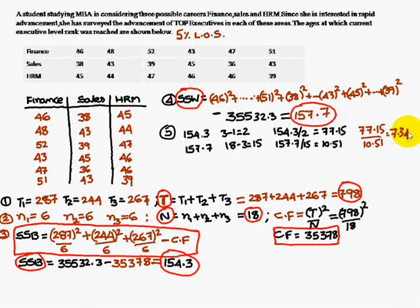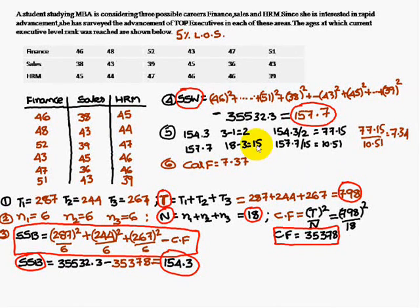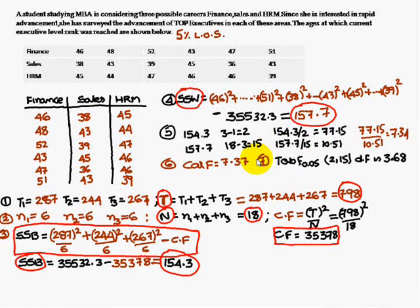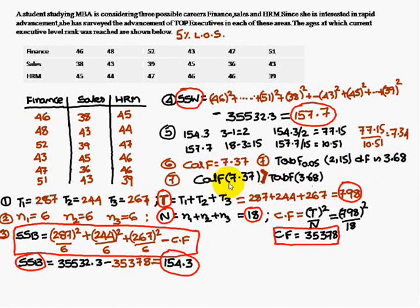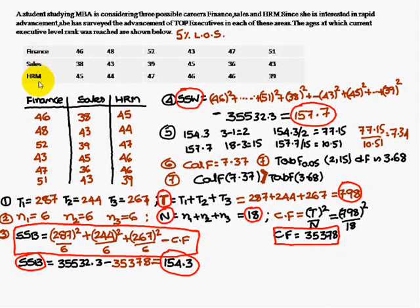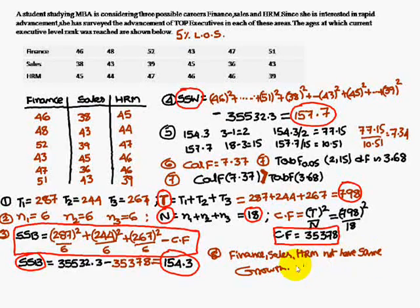The F-test uses the greatest value divided by the lowest value: 77.15 / 10.51 = 7.34. This is the calculated F value. The tabulated F value for degrees of freedom (2, 15) is 3.68. Since the calculated F value (7.34) is greater than the tabulated value (3.68), H₀ is rejected — meaning finance, sales, and HRM do not have equal growth.